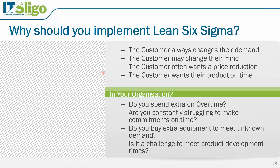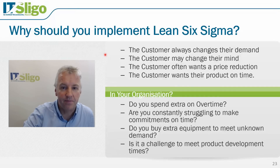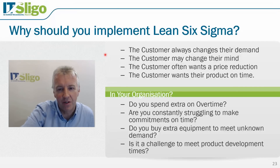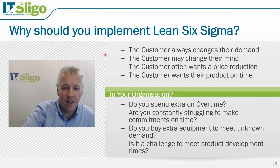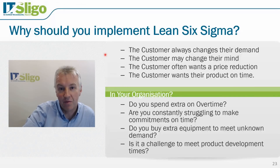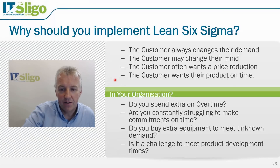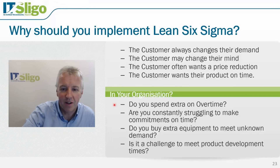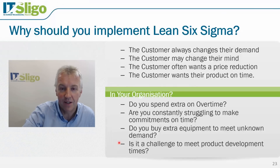Some of the reasons you should implement lean: customers generally change their demand — they increase quantities, decrease them, or change their minds on features they want. They often want price reductions and discounts, and they want their product on time — not a day or even an hour late. Sometimes they don't even want it early, particularly if you're a supplier into a manufacturing site where they have nowhere to store it. To meet these demanding customers, you might be spending extra money on overtime, buying extra equipment just in case, and if you're developing new products, product development times and life cycles are shortening.